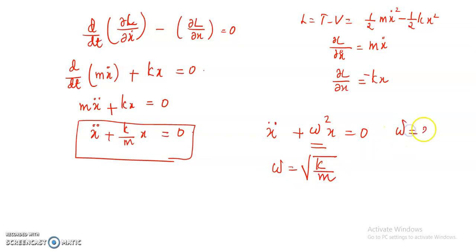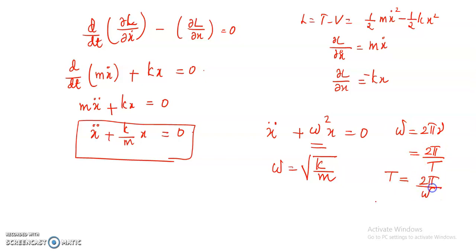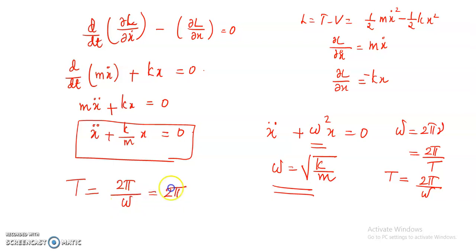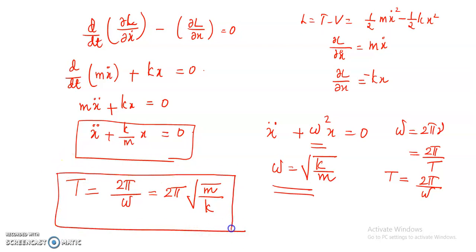We know that omega is related to frequency by 2 pi nu, or it is related to the time period by 2 pi by T, since nu equals 1 by T. So omega equals 2 pi by T, or the time period T equals 2 pi by omega. Since omega equals root K by M, we have 1 by omega equals root M by K. Therefore, the time period is T equal to 2 pi root M by K. This is the equation for the time period of the spring-mass system executing simple harmonic motion.